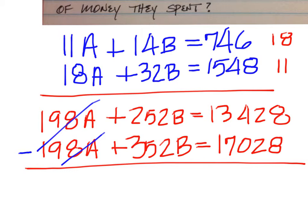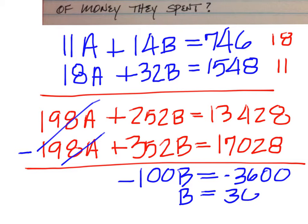So now I can subtract here and get rid of these. 252 minus 352 is negative 100B, and 13,428 minus 17,028 will be negative 3600. So clearly B is going to be 36.